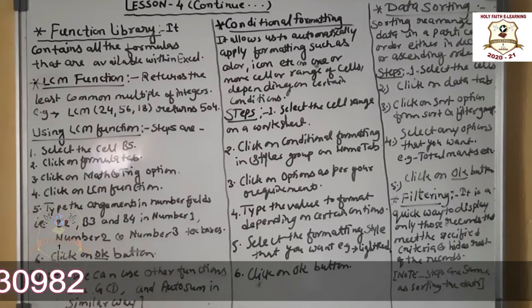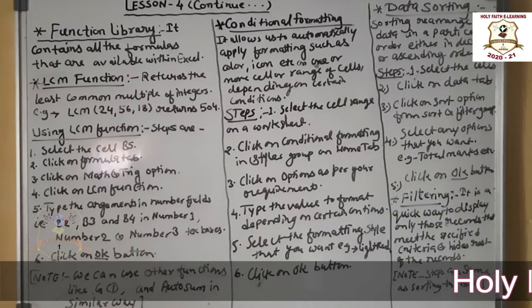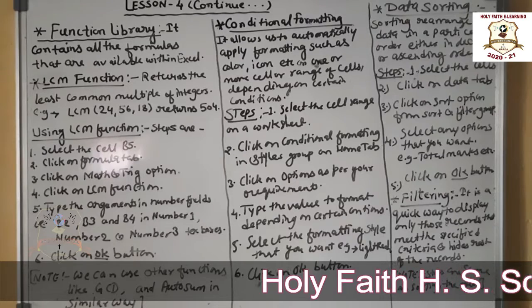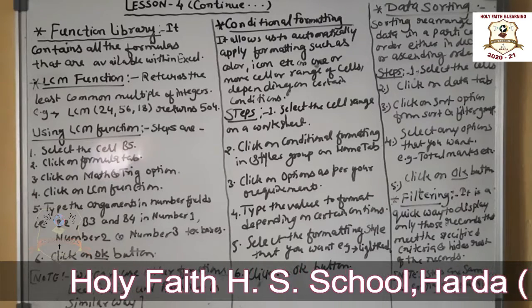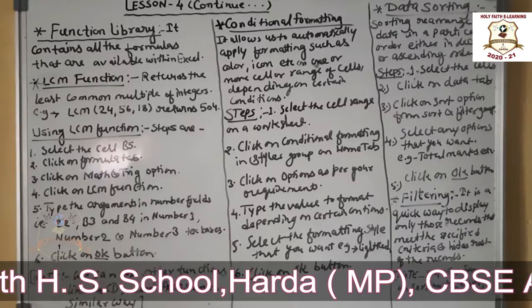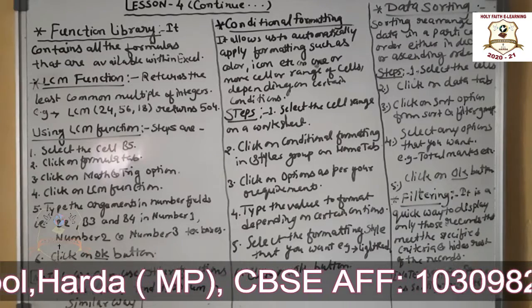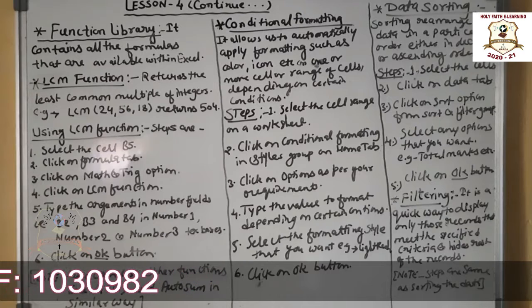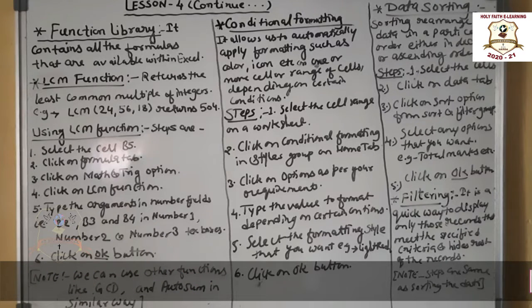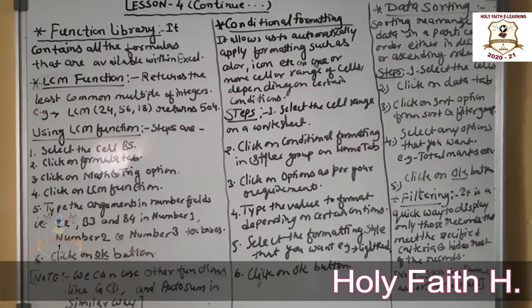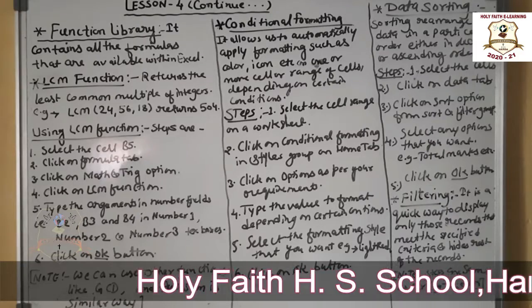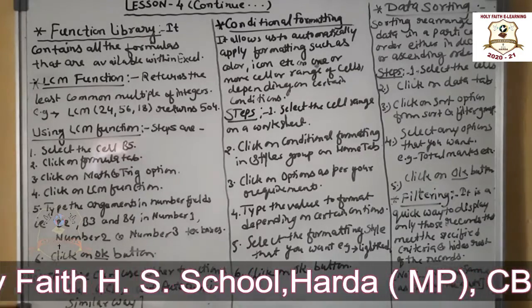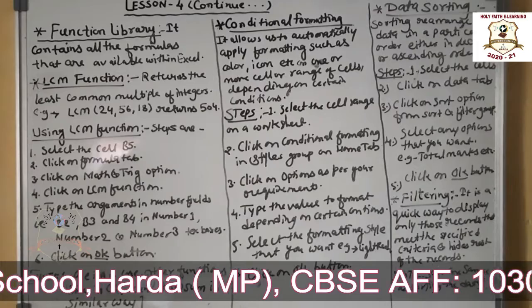GCD function returns the greatest common divisor of two or more integers. AutoSum function adds all the values. I have already explained AutoSum function, sum, and average in your practical videos. The process of applying GCD and other functions are the same, so we just move to our next topic.